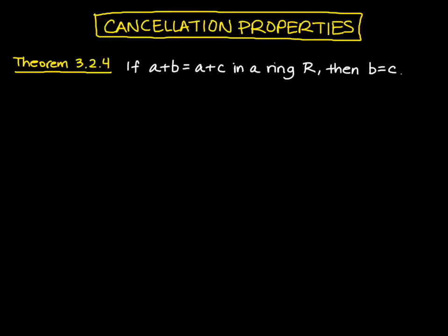In this video we want to discuss cancellation properties. So we start with the following theorem that says that if a plus b is equal to a plus c in a ring, then b equals c.